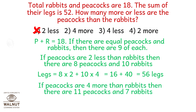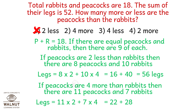If peacocks are 4 more than rabbits then there are 11 peacocks and 7 rabbits. Let's try option number 2. Legs equals 11 into 2 plus 7 into 4, which is 22 plus 28, which is 50. So option number 2 is out.